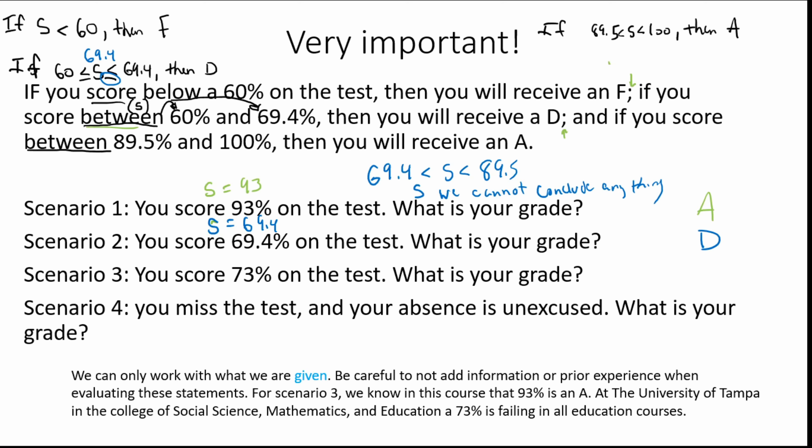Be careful not to add information or prior experience when evaluating these statements. For scenario three, we know in this course that a 93% is an A. At the University of Tampa in the education courses, a 93% is a very low B — a 96 is the cutoff for an A. So different institutions have different policies, and we can only use the information that we're given. At the University of Tampa in the College of Social Science, Mathematics, and Education, a 73% is failing in all education courses.